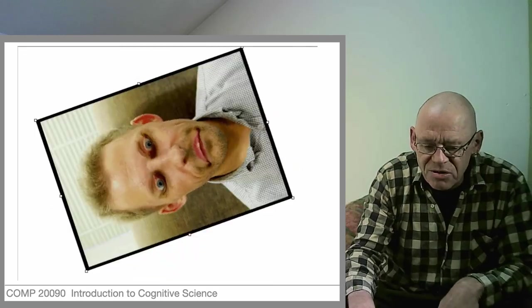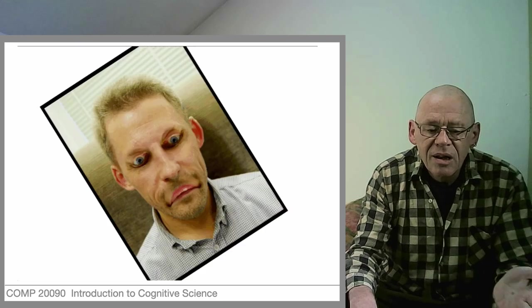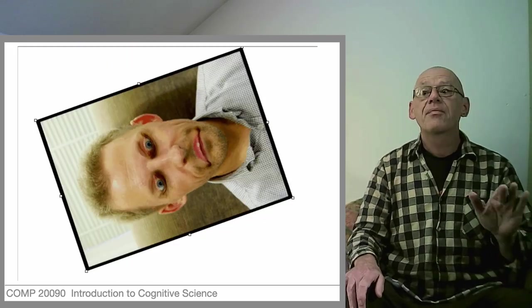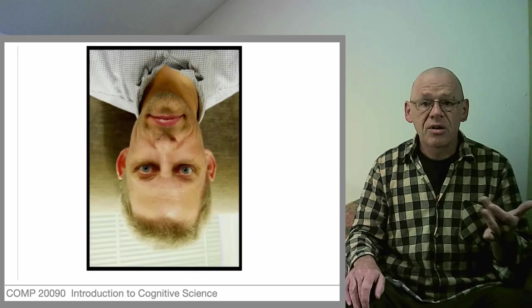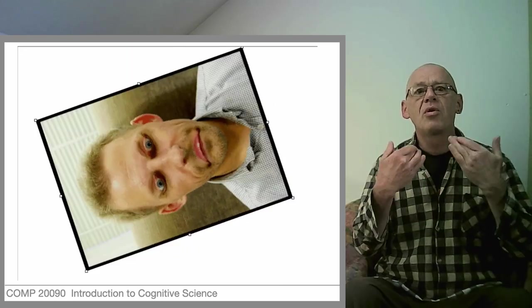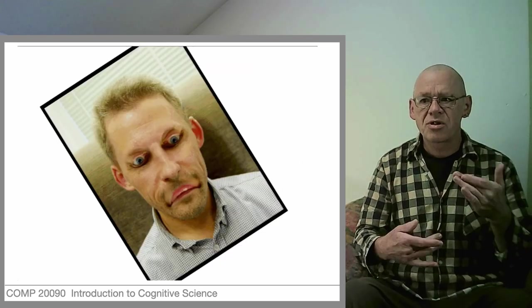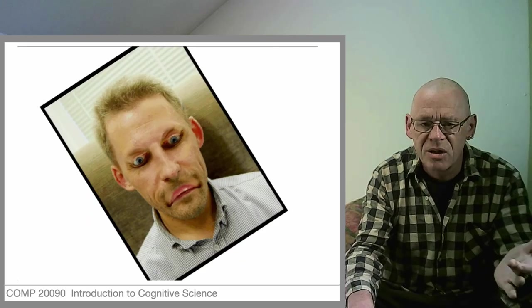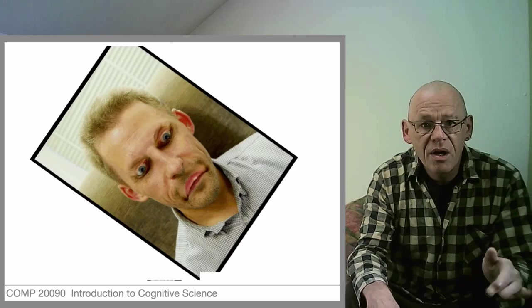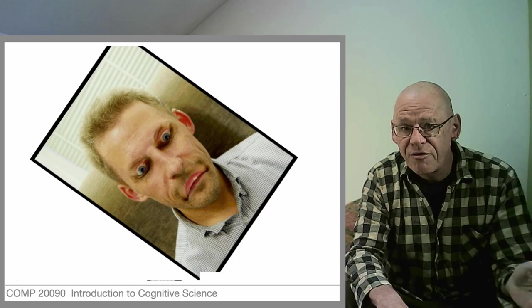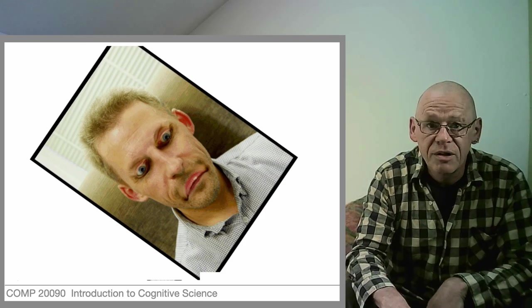So the Thatcher image illustrates something very important: that seeing involves both attention to detail—so we pick out the eyes, we pick out the nose—but also much more high-level stuff such as recognizing and integrating all these details into a face. That's enough for now, but that's hopefully of some interest.